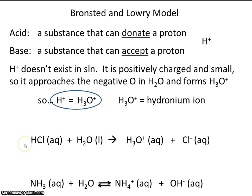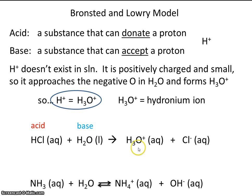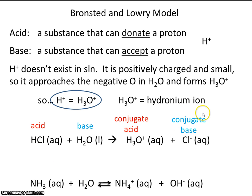In the first reaction, we labeled HCl as the acid, and we established that water was the base because it accepted a proton and turned into H3O+. Reactions can be reversible — they go left to right and right to left. In the reverse reaction, H3O+ is turning into H2O, so it's donating a proton, making H3O+ an acid — we call that the conjugate acid. And chloride, in the reverse reaction, is turning into HCl by accepting a proton, so chloride is our conjugate base.